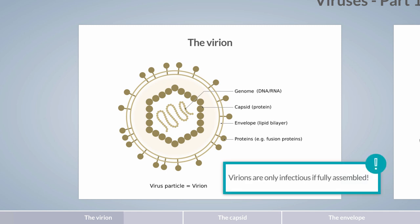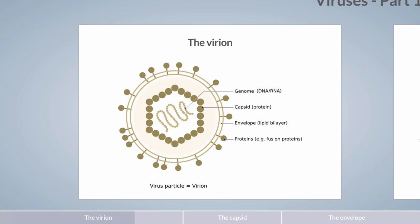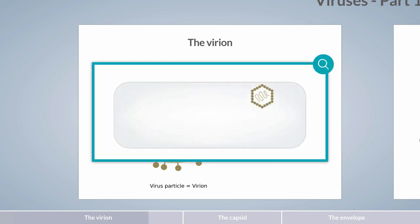A virion is only infectious if fully assembled. If the envelope of the virus is destroyed, it is no longer infectious. Viral genomes don't encode the full set of proteins required for independent metabolism. However, they only encode certain proteins that link the virus to the metabolic pathways of the cell they infect, such as energy metabolism or translational machinery.